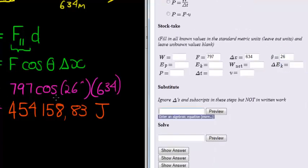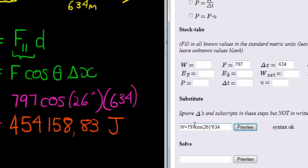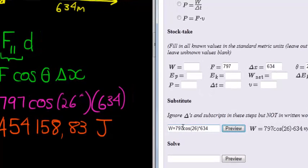If we substitute, here we go. That is our substitution step. You can do it just as it is there. Work is equal to, and remember to use a capital W, force of 797 times cos of 26 times 634. Preview. Looks good.